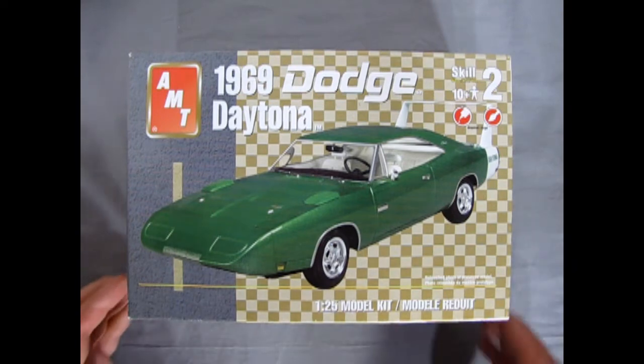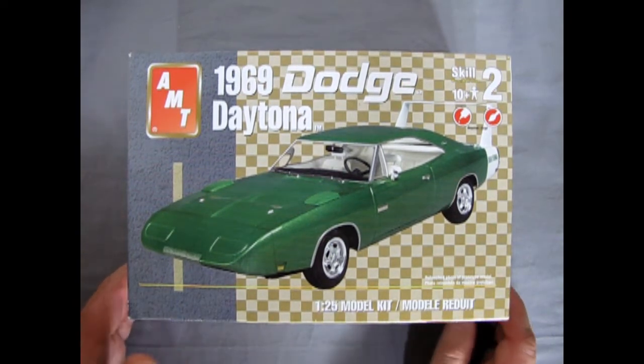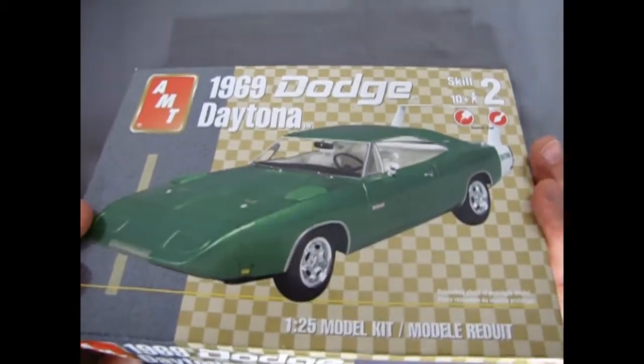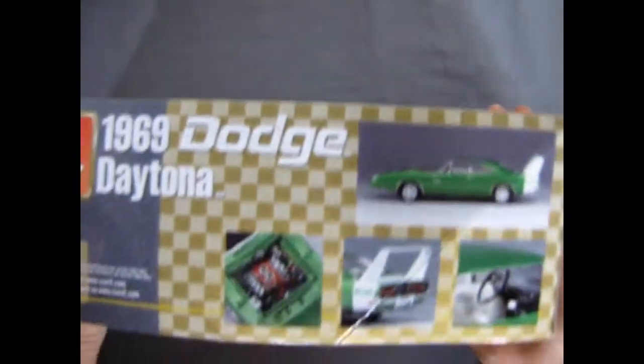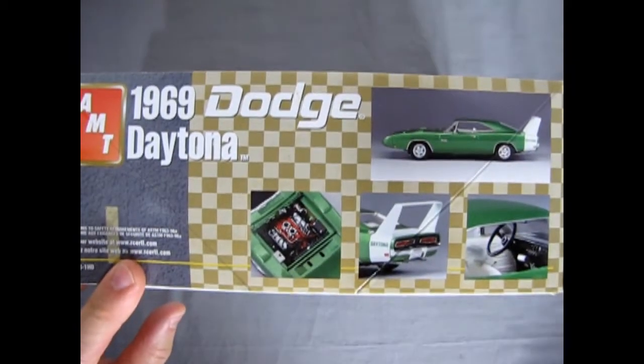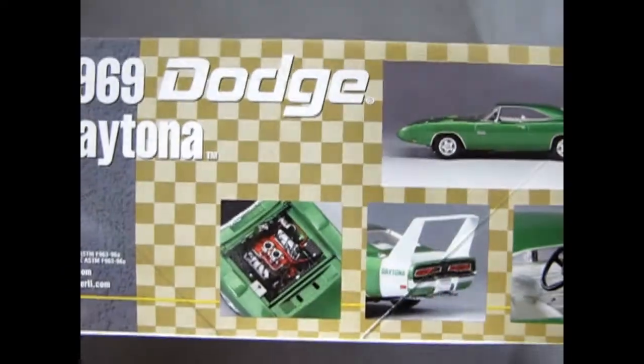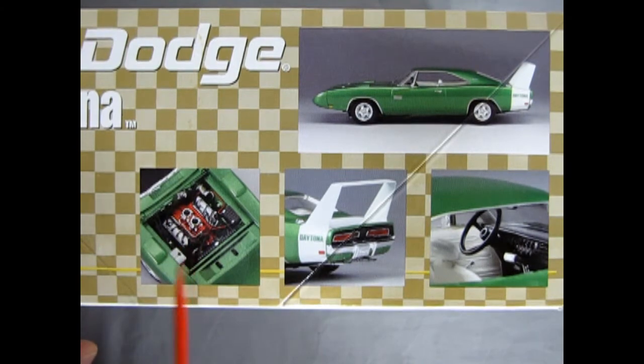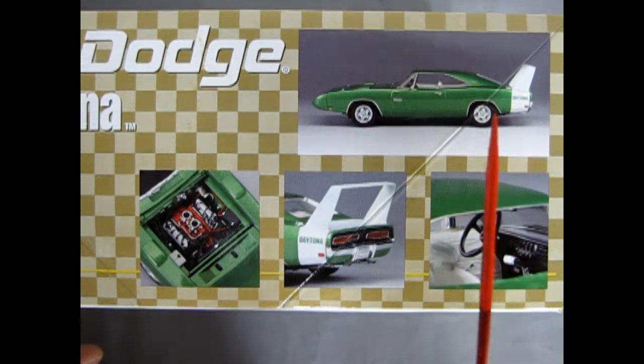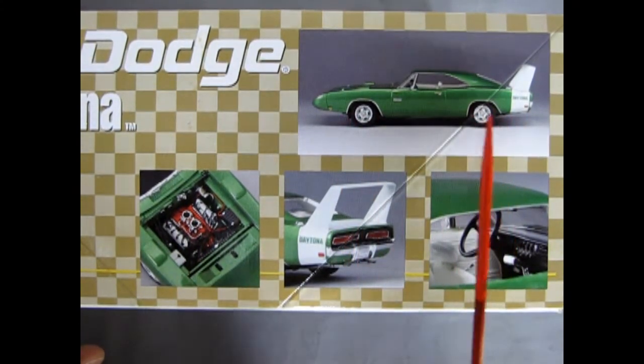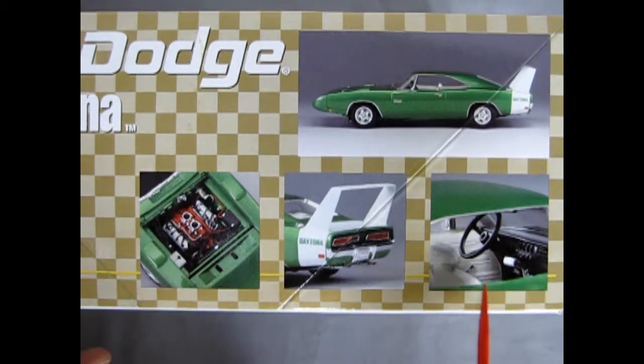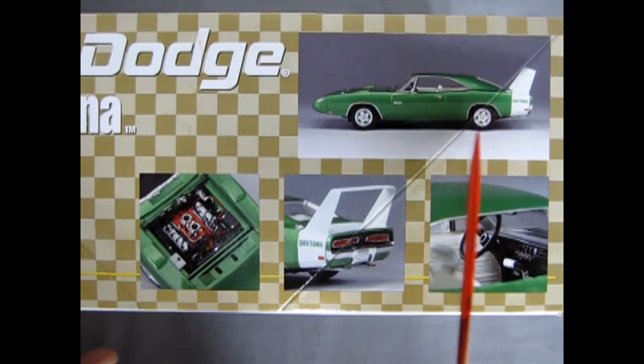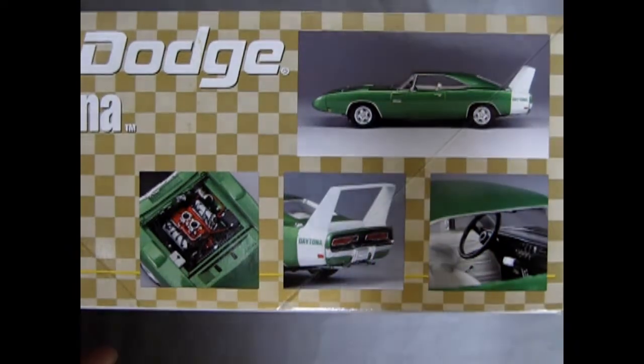AMT has brought out this 1969 Dodge Daytona. As you can see it's quite a neat model kit. It does have a nice build up here with the dual carburetor 426 HEMI, the nice green metallic paint job, the high fin tail lights, beautiful interior. The only thing that was missing sadly out of this kit are these amazing wheels. They just were never included.